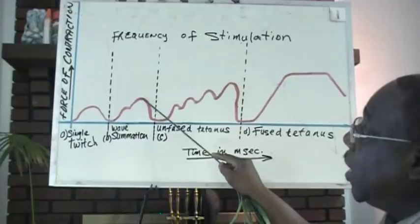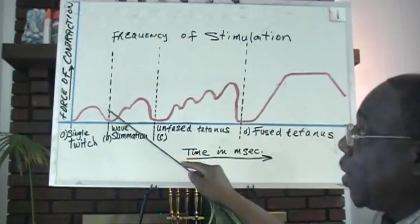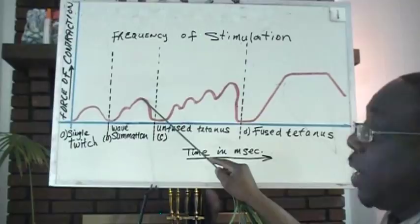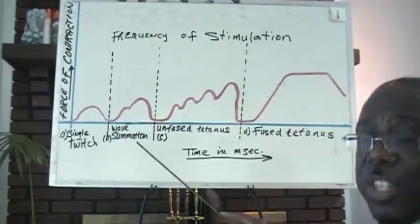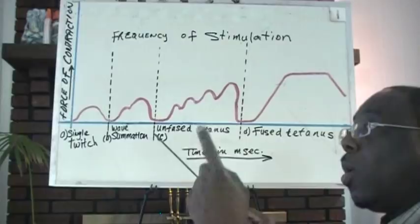Notice that the peak of the second contraction is higher than the peak of the first, of one twitch. That's because there are two added here. The peak is higher. So the force of contraction is stronger here. This is called summation, the addition of one contraction to others.